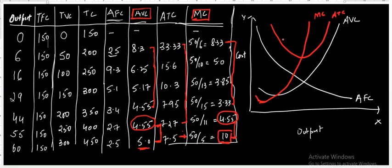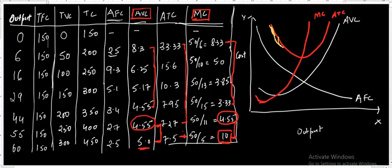Initially, the average total cost curve is falling. The reason for this fall is that both the average fixed cost as well as the average variable cost are falling. Since average total cost equals average variable cost plus average fixed cost, and both components are initially falling, the average total cost also falls. This may be because of the operation of increasing returns.